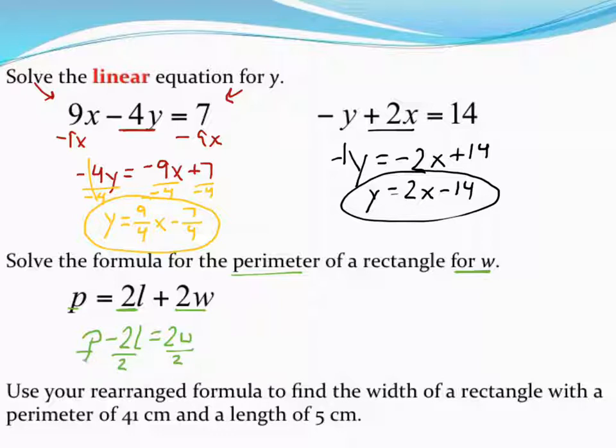But what I'm going to do instead is what I showed you up top. I'm going to divide each individual piece of this problem by 2. So those 2s will cross out. I'm going to sort of rewrite the order of my equation too, so the w equals is in front. p divided by 2, there's nothing I can do with that. It's just p divided by 2.